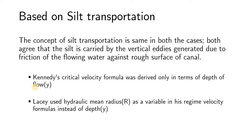The difference is that Kennedy considered a trapezoidal channel section, and therefore he neglected the eddies generated from the sides, on the presumption that these eddies have horizontal movement for the greater part and therefore did not have silt-supporting power. For this reason, Kennedy's critical velocity formula was derived only in terms of depth of flow.